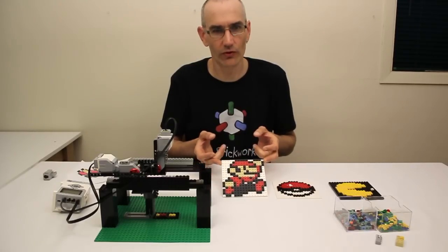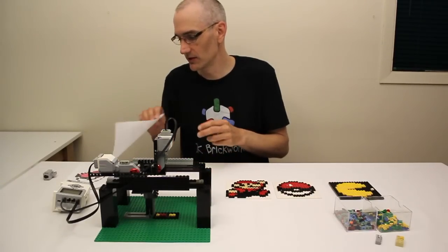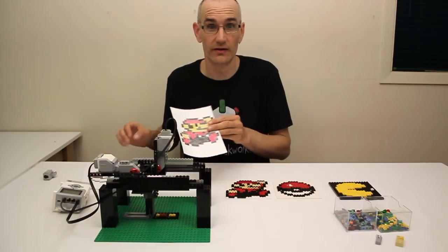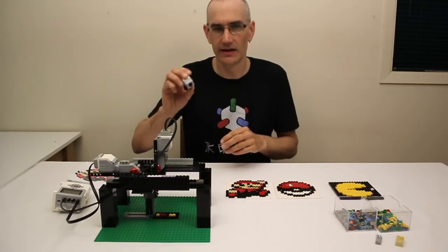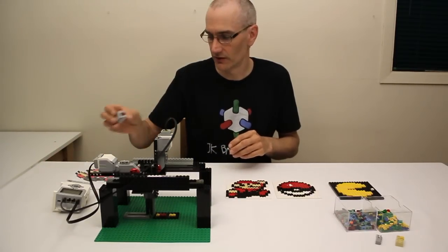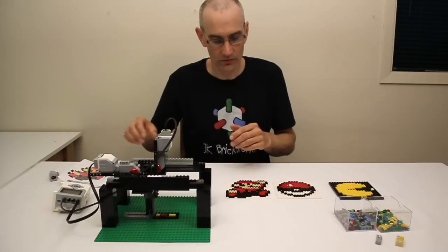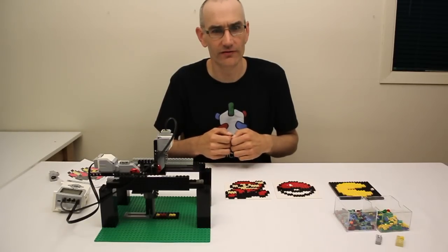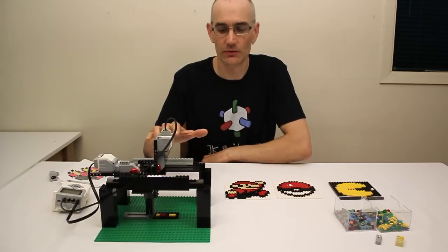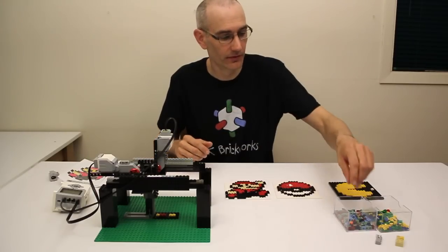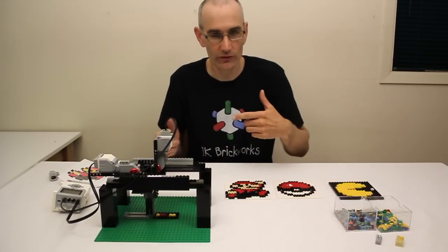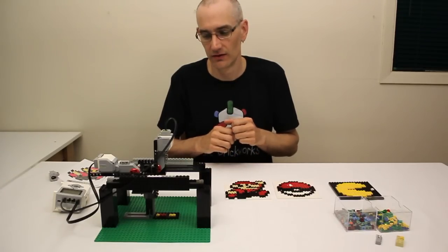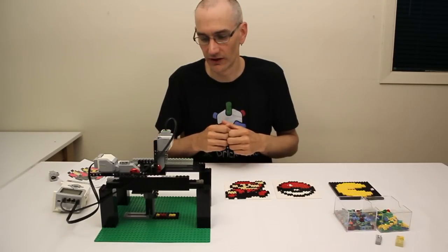But I don't just want it to build pre-programmed mosaics. I want to be able to feed it an image, say this or this or pretty much anything, and have it scan that image using the Mindstorms color sensor and then rebuild that image in LEGO mosaic form. For this initial prototype I just wanted to test being able to pick up the one-by-one plates, move them around, and then attach them to another plate. So let's take a closer look at how that works.